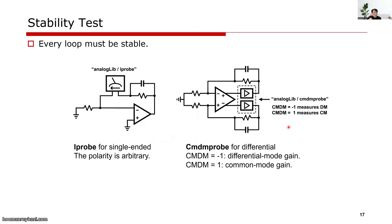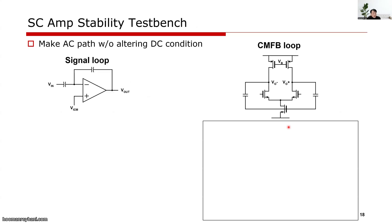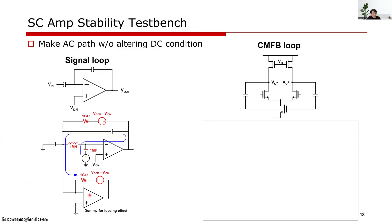When we design a circuit, verifying stability is very important. Cadence provides good tools for that — IPROBE and CMPROBE make stability checking easy. But if you cannot use these techniques in different simulation tools, you need to generate a test bench. How can you make a test bench? We should not alter the DC condition — we need to keep it. Then we provide the test signal for the loop and put a dummy for the return signal. We should do the same thing for the common mode feedback loop. We will discuss this in the course.